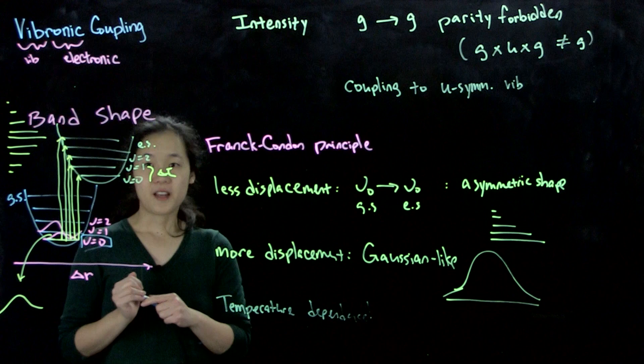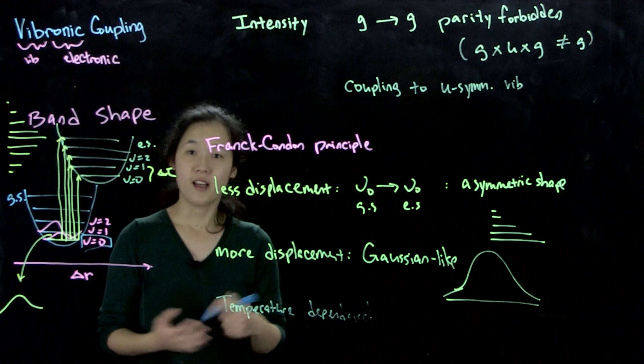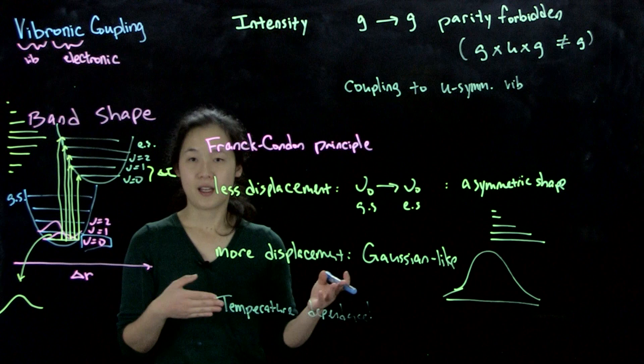So those are the major factors that result in band shape and changes in intensity. That's why electronic absorption spectroscopy isn't always as straightforward as reading one signal at a time — we have splitting, different band shapes, broadening, sharpening, and changes in intensity as things couple. There are rather a lot of complicated things going on.